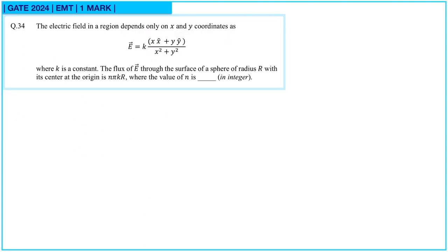Next question. The electric field in a region depends only on x and y coordinates as E bar equal to k times (x x-cap plus y y-cap). This is basically the r-bar vector, so this will be k into r-bar upon x² plus y², that is r², where k is a constant. The flux of E through the surface of a sphere of radius r with its center at origin is n·π·k·r, where the value of n is?